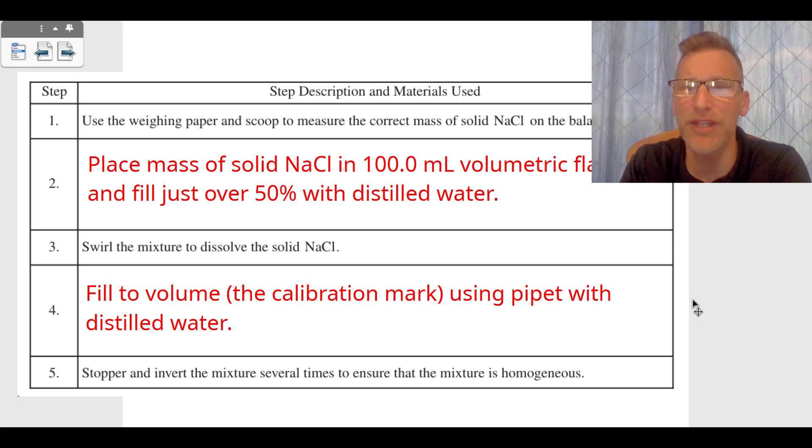So that's exactly what they want to do for points two and three. As you can see, they gave us what step one was. They weighed the NaCl, the 1.99 grams of NaCl, on weighing paper using the balance. So what are we going to do with that solid?